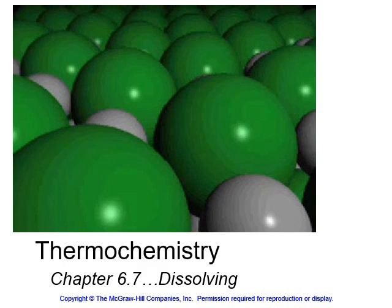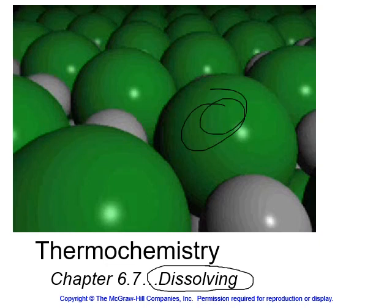Here's our last section of the thermochemistry chapter, and we're now covering dissolving. You may think you knew everything about dissolving, but there's a lot going on energetically. When substances dissolve, bonds are broken and made. Depending upon whether they're ionic or covalent, there are different energetics that go along with it, and we're going to be thinking about how things dissolve.